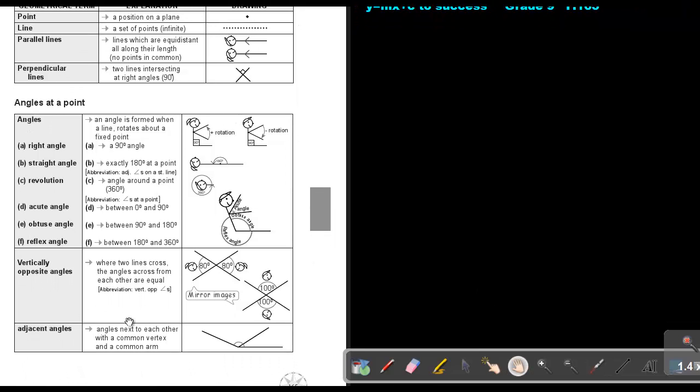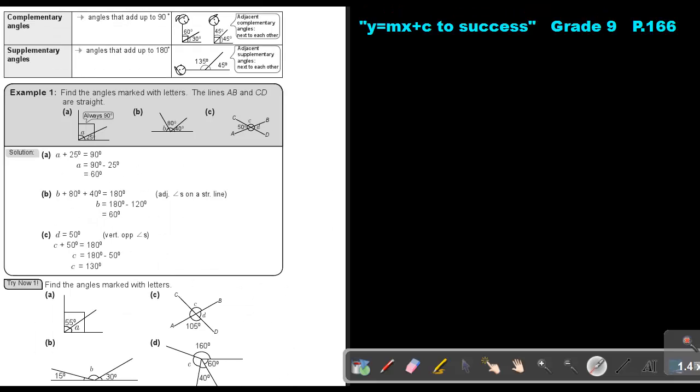Adjacent angles: now angles next to each other with a common vertex and a common arm. So if you look, this is the common arm, and the common vertex, this is the common vertex. So this angle and this angle will be adjacent angles.